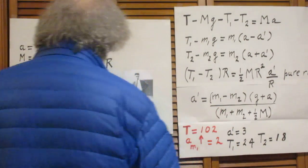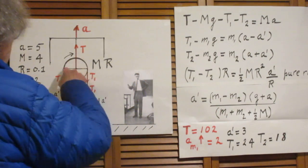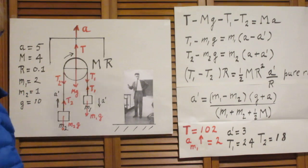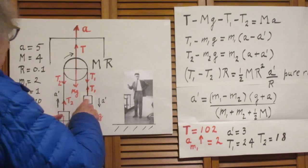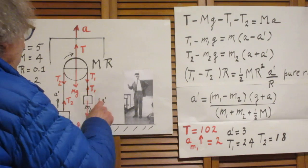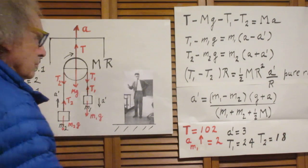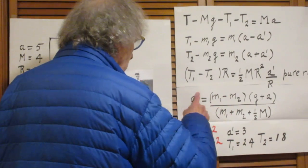When m1 equals m2, it's obvious that this is not going to rotate. So if m1 equals m2, a prime must be zero. And indeed, if m1 equals m2, a prime is zero.